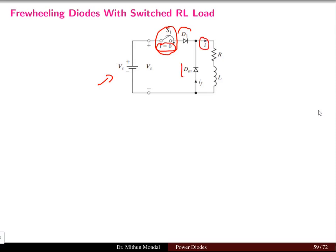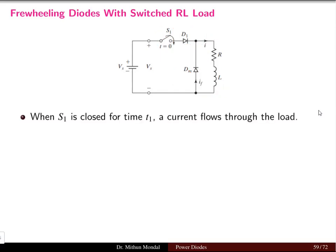When a diode is connected in parallel with the main load, this diode is known as the freewheeling diode. When the switch is closed, current will flow only in the load — it cannot go through the freewheeling diode because the diode blocks current in the forward bias condition. However, in the reverse bias condition the current can flow through the freewheeling diode. We will now see the operation of the freewheeling diode.